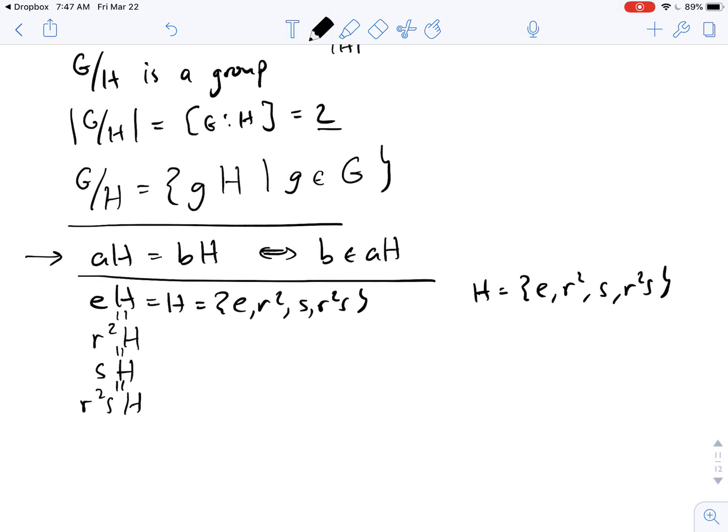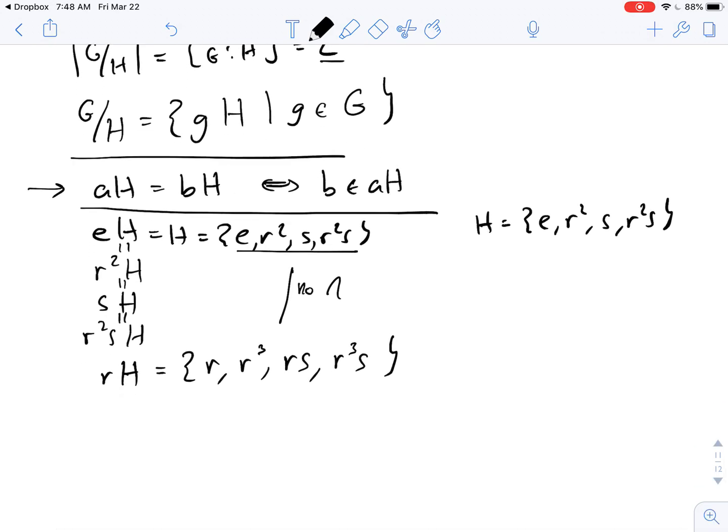Now, if I want to get the other element of G mod H, I'm going to have to take a coset which doesn't use one of those as a representative. So the first one I can think of is how about RH. So RH, that's going to equal R times E, which is R, R times R squared, which is R cubed, R times S, and R times R squared S, which will be R cubed S. And we can see there's no intersection between these two cosets. We get all eight elements of the group. So in fact, our G is a disjoint union of EH and RH, which is what we expect.